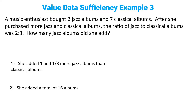Okay, let's get on to that data sufficiency example. A music enthusiast bought two jazz albums and seven classical albums. After she purchased more jazz and classical albums, the ratio of jazz to classical albums was two to three. How many jazz albums did she add? We always go to the question, figure out exactly what we've been asked to do, and then write it down. In this case, we're being asked for the number of added jazz albums — we'll call that J.